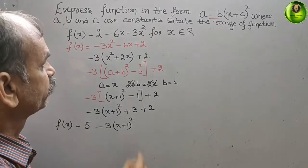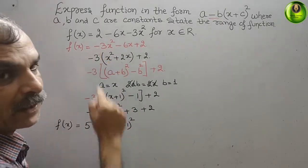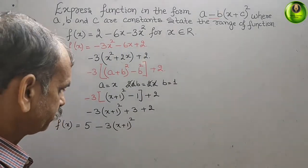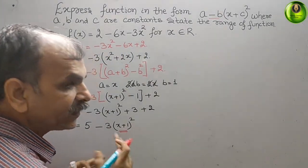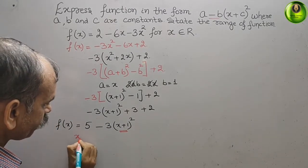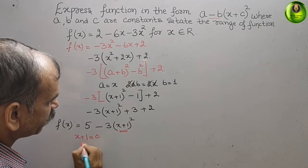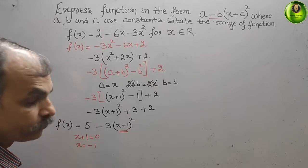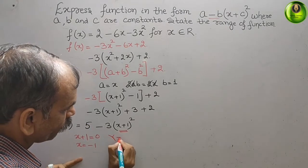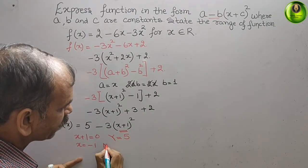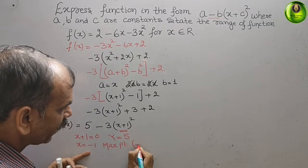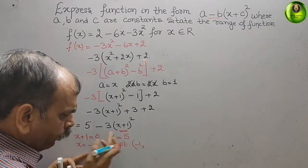Looking at the equation, the negative sign before the squared term means we get a maximum point. To find the maximum point, we set (x plus 1) equal to 0, giving x equal to minus 1, and y equal to 5. Therefore the coordinates of the maximum point are (minus 1, comma 5).